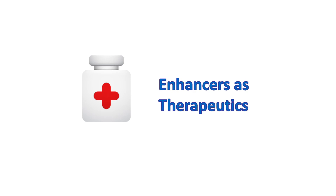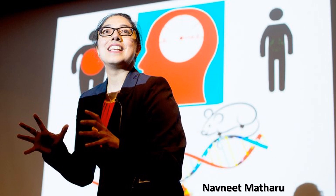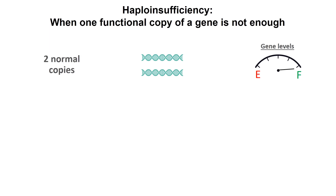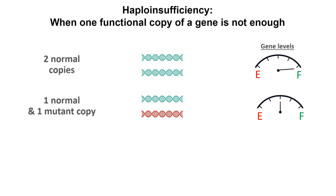Now I'll switch to the second part of the talk: how we can use enhancers as therapeutic targets. This work was spearheaded by an extremely talented postdoc in the lab, Navneet Matharu, who has now transitioned to be an assistant professor at UCSF. Navneet set out to tackle haploinsufficient diseases. We usually have two copies of a gene — one from our mom, one from our dad — and that leads to normal gene levels. Every once in a while, we could have a loss-of-function mutation in one copy, providing only 50% of the gene and subsequent protein expression.